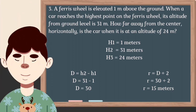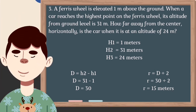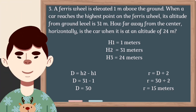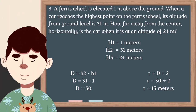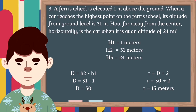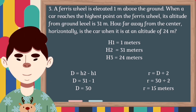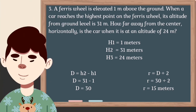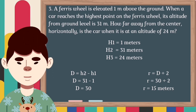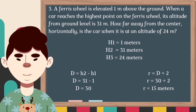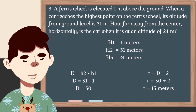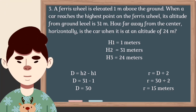Now let us solve for our diameter. D is equal to H2 minus H1, therefore D = 31 - 1, and our diameter is equal to 30. Then for our radius, R = D / 2, so R = 30 / 2. Therefore, our radius is equal to 15 meters.